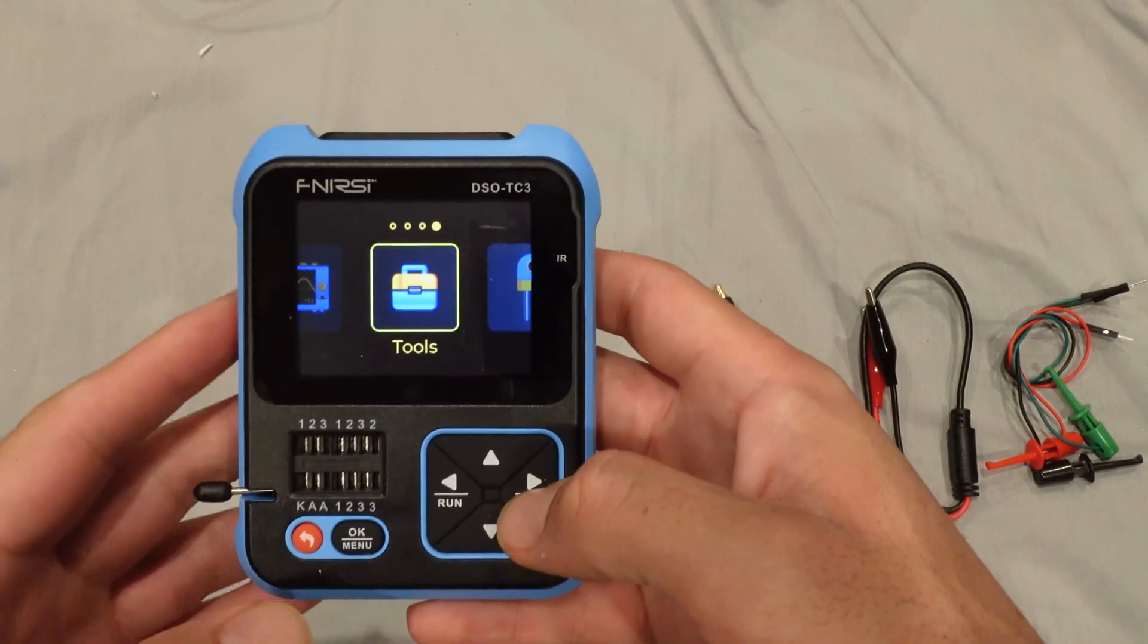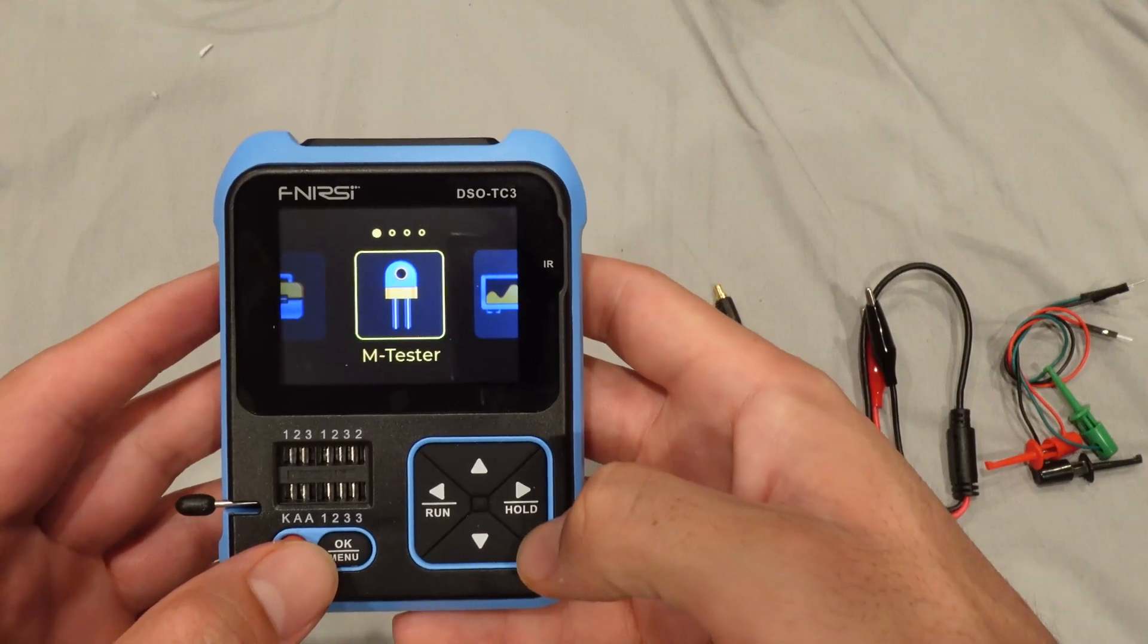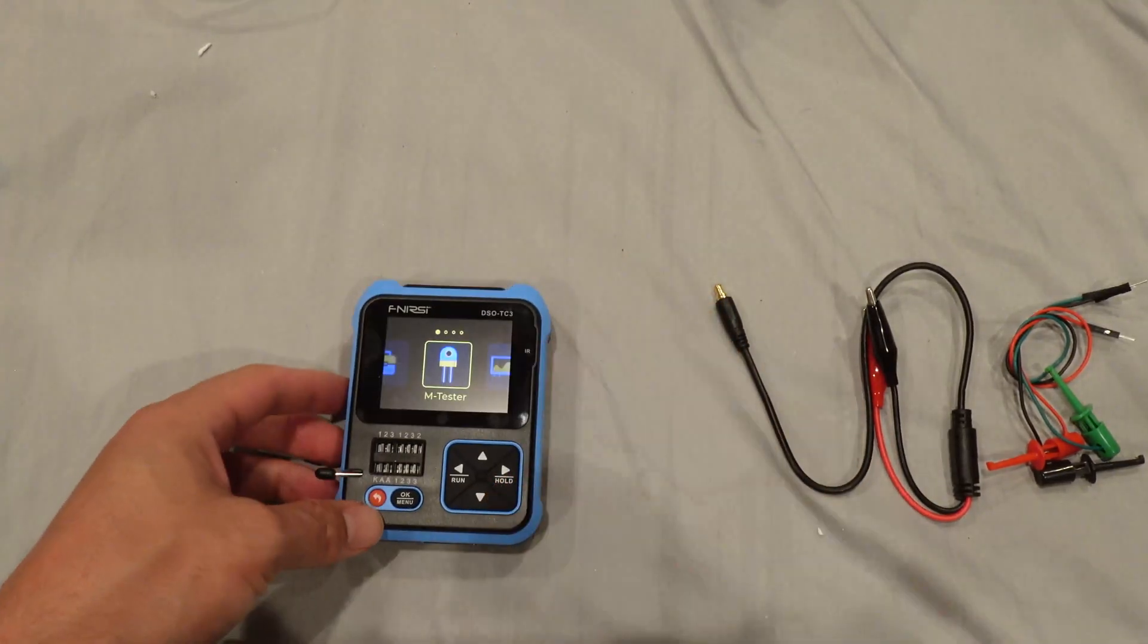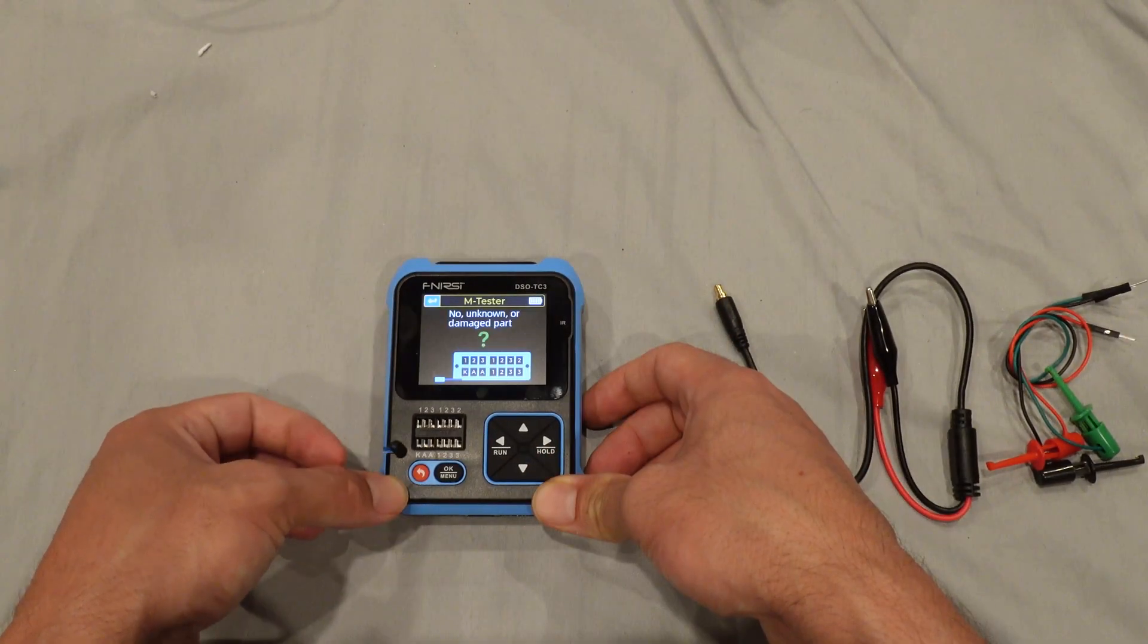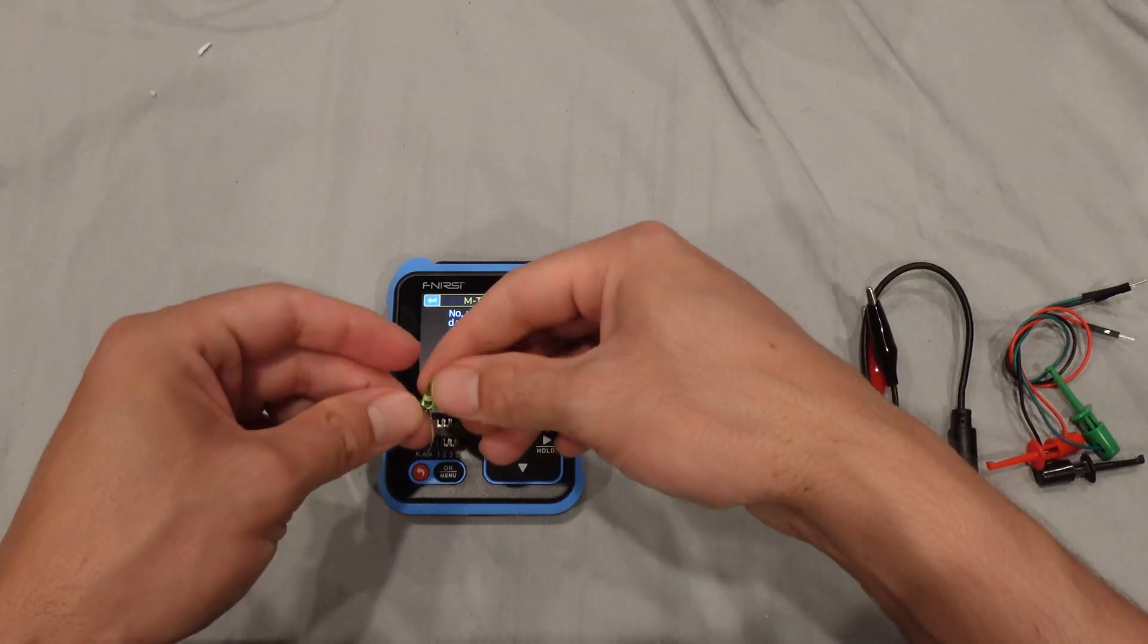The menu system is very simple. It has four sections: M-tester, oscilloscope, generator, and tools. So let's start with this M-tester. You just lift this lever and put your components over there. So simplest one could be an LED.